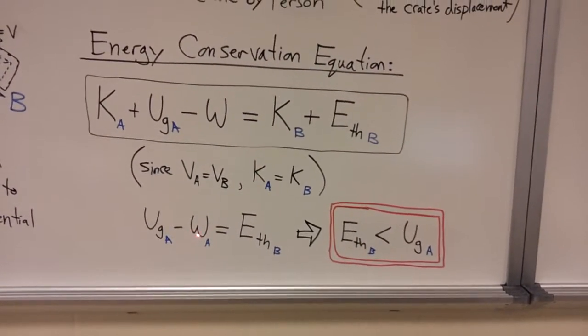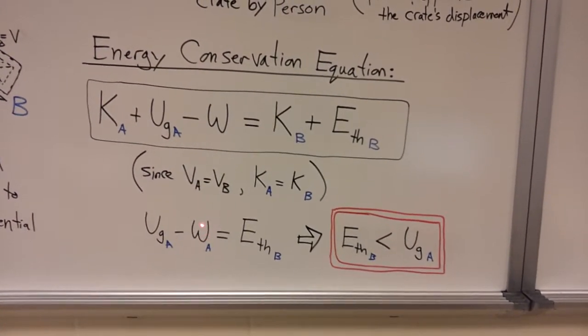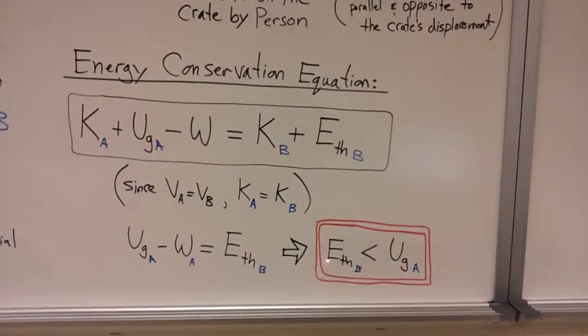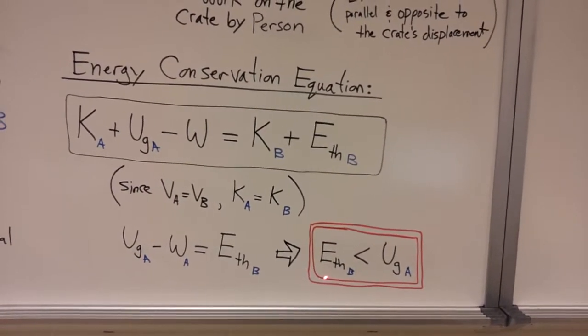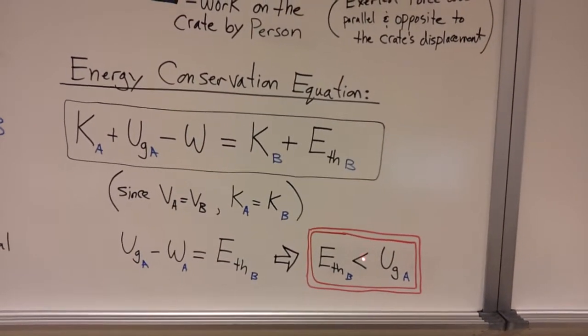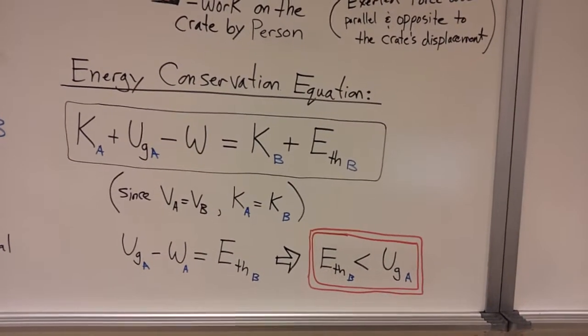And so if we have to subtract the work done by the person, the negative work, from the gravitational energy to get thermal energy, that means the thermal energy stored in the end has to be less than the gravitational energy we started with, which, if that goes down to zero, that's also the change in gravitational potential energy.